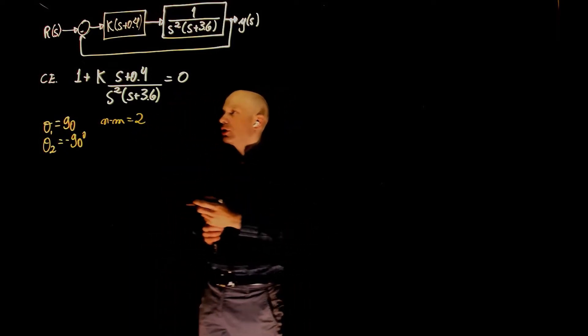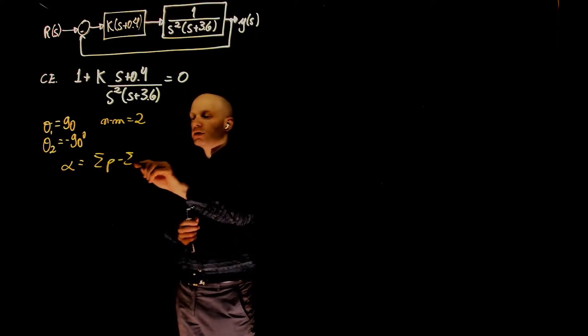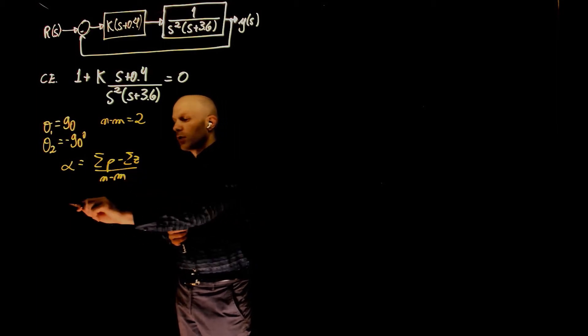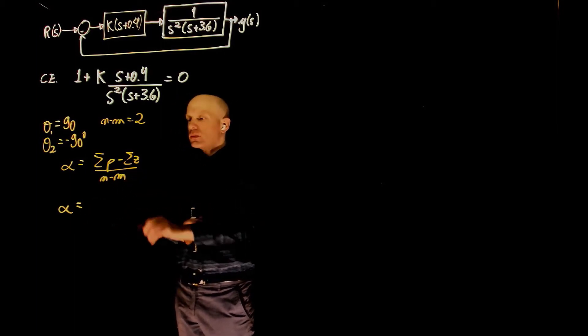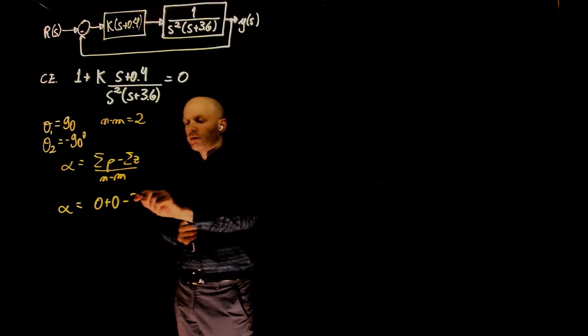We can calculate the centroid of these asymptotes. Sum of poles minus sum of zeros divided by n minus m. And this is, poles we have 0, 0, negative 3.6,